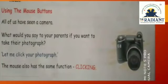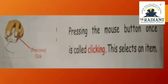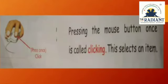So, the mouse also has the same function: clicking. What is clicking? Pressing the mouse button once is called clicking. When we single-click, what happens? We can select the item.